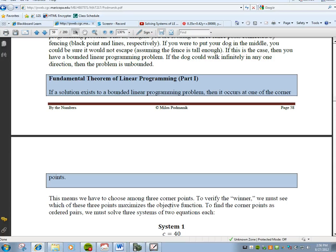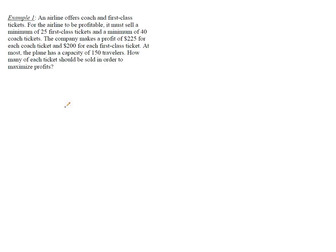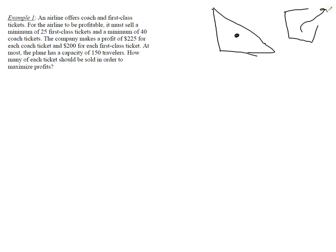We're going to look at one linear programming problem, but we should emphasize the fact that a solution exists — if a solution exists to a bounded linear programming problem, then it occurs at one of the corner points. Bounded means that if I draw a region and let loose a wild animal, that animal could never get out of there — that's considered a bounded region. A region like this is not considered bounded because the animal could escape.